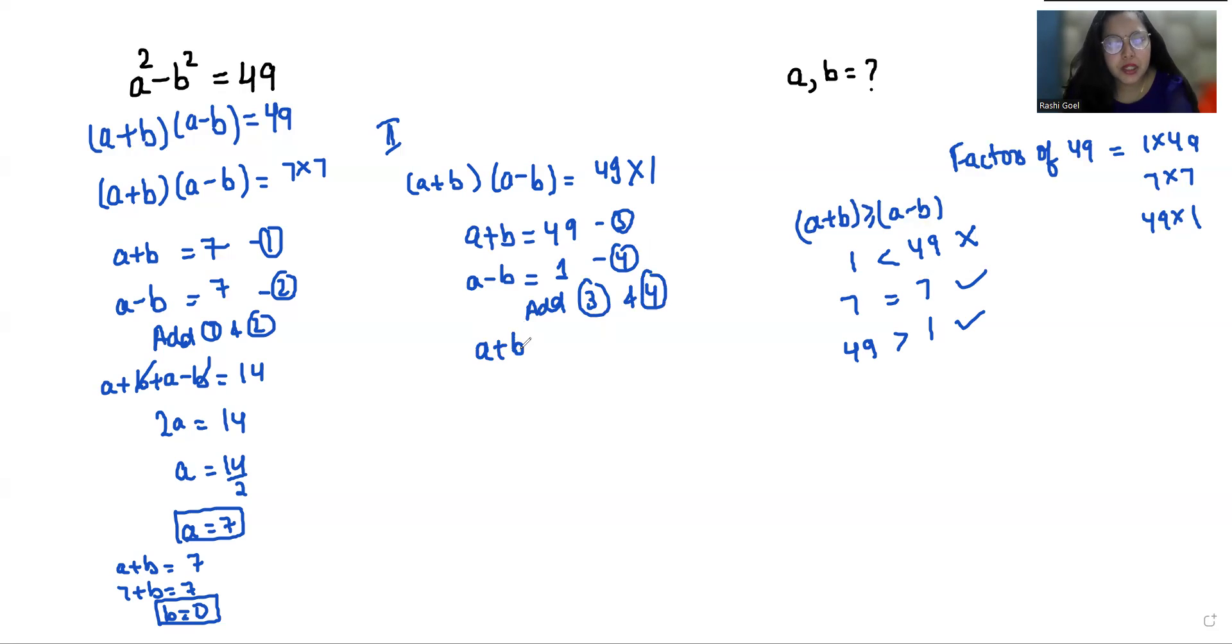So a+b + a-b = 49+1, which gives 2a = 50. Therefore, a = 50÷2 = 25. Now, a+b = 49, and if a = 25,